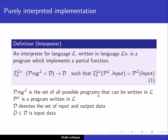More formally, we would say that an interpreter for language L written in language L-O is a program which implements a partial function. Let's go through this notation. An interpreter that interprets a program written in L and is implemented in the language L-O is a function from the tuple prog-L cross D. Notice that this is a cross product, and since we have only two operands, this means it's basically a two-tuple, or a pair.